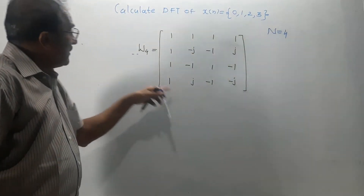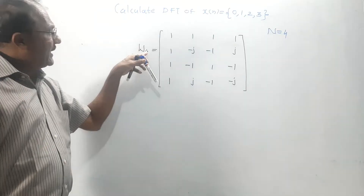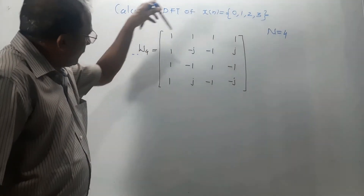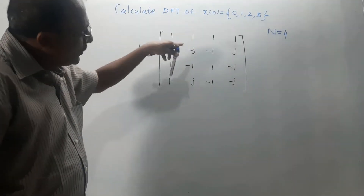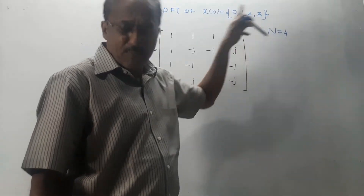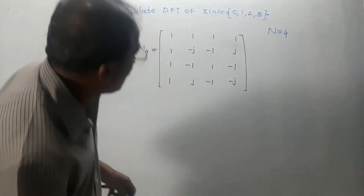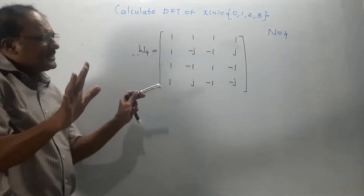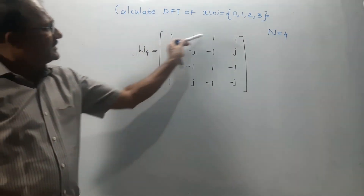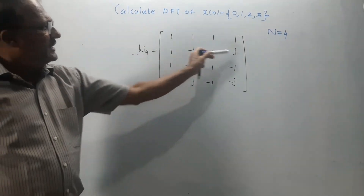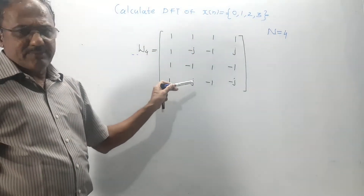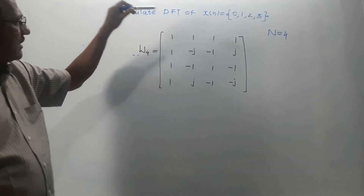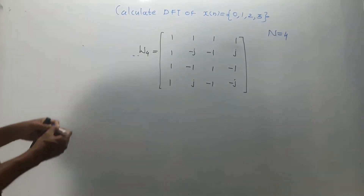This is the matrix of W4, the matrix of twiddle factor, which you can use for N equals 4. From the exam point of view, you just have to memorize this matrix. It's very simple — all these values are 1, then only j and minus j terms are there. Just memorize this matrix of twiddle factor.